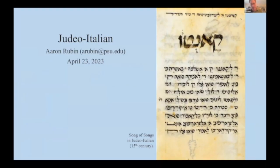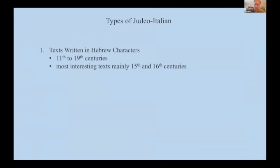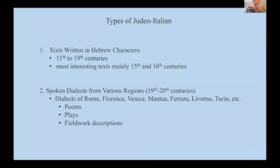Judeo-Italian is a bit of a tricky subject because the term is not easy to define. It's really an umbrella term that can refer to a lot of different things. I would divide Judeo-Italian into two broad categories: first, Italian texts written in Hebrew characters, which come from as early as the 11th century until the 18th or 19th century; and second, a whole variety of spoken Jewish dialects in Italy, which vary by location.